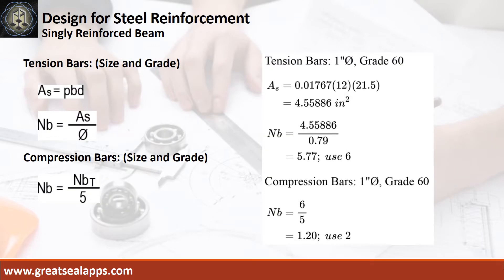Given rho equals 0.01767, B equals 12 inches, and D equals 21.5 inches, the area of steel for tension bars is 4.55886 square inches, and the number of bars for 1 inch diameter is 6. The number of compression bars is 2.